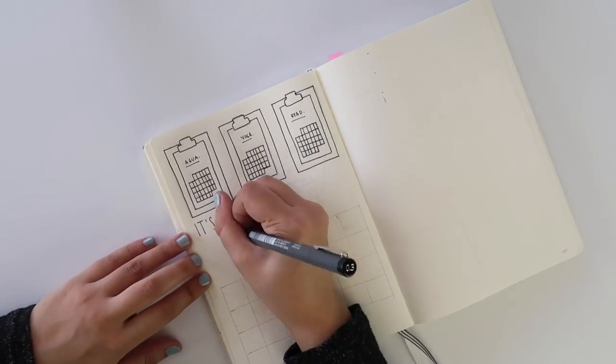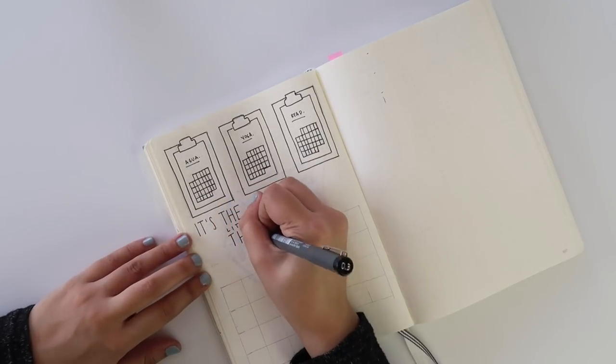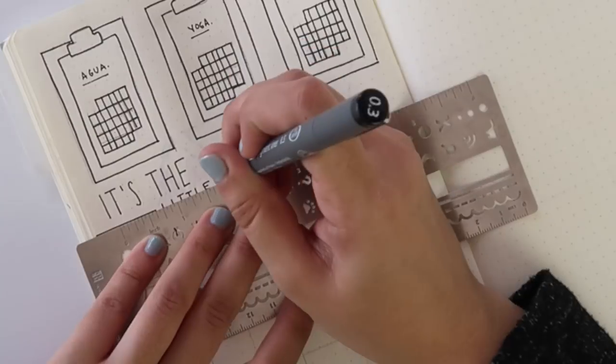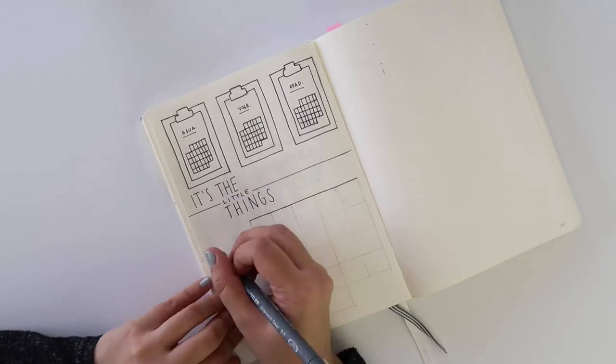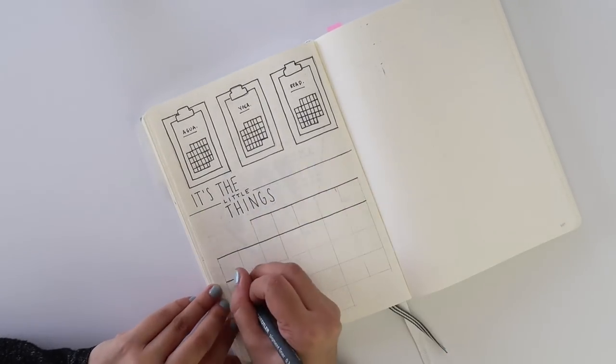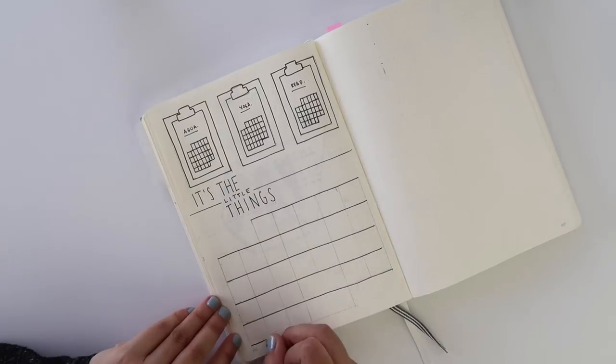Right below my clipboards, I decided to create a box for every day of the month to track the little things. It's the little things section where I write down something small from the day that I really appreciated.